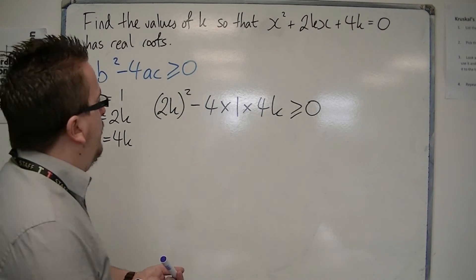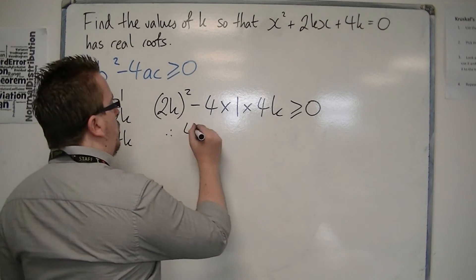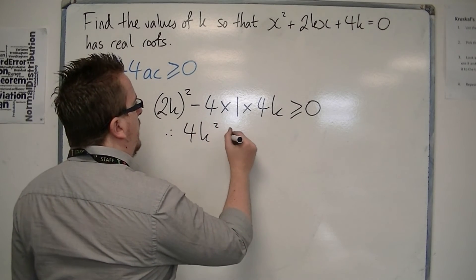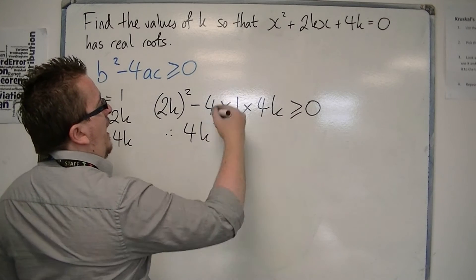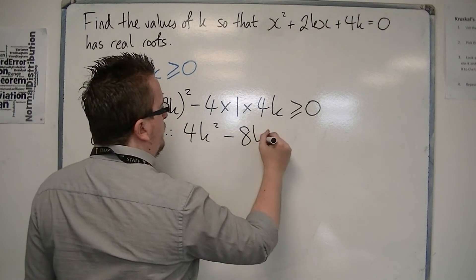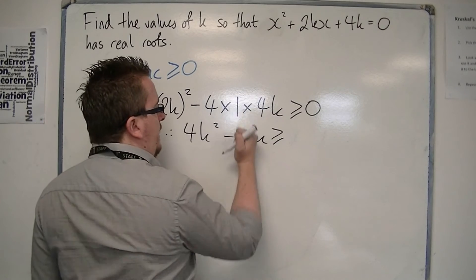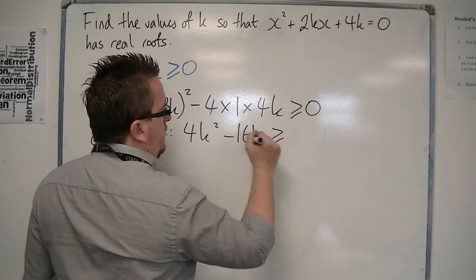So we have 2k all squared, is 4k squared, and this is 8k, oh sorry, not 8k, 16k, almost made an error there.